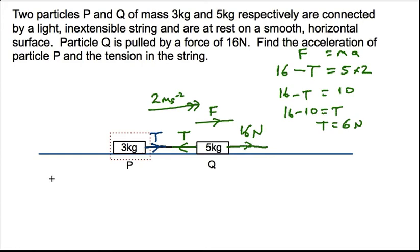Again we know that F equals MA. We know the mass is 3 kilos and the acceleration is 2 meters per second per second. That's 2 times 3 is 6 Newtons. There's a resultant force of 6 Newtons on P. Where that resultant force is 6 Newtons, the only force pulling it is the tension. That means that the tension must equal 6 Newtons.